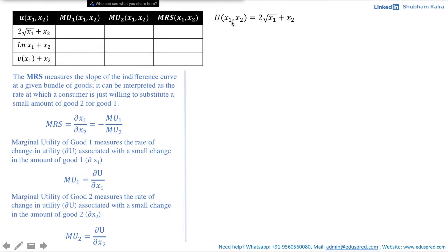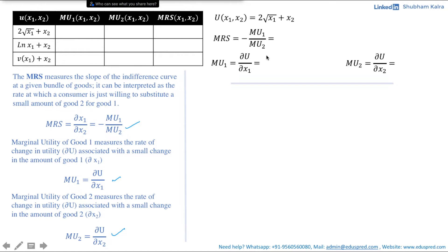The first utility function is u(x1, x2) = 2√x1 + x2. We know that MRS = −MU1/MU2, so we need to calculate the marginal utilities. To calculate MU1, we partially differentiate the utility function with respect to x1, keeping x2 constant — the derivative of a constant is 0. So the partial derivative of u with respect to x1 is 2/(2√x1) + 0, which simplifies to 1/√x1. Thus MU1 = 1/√x1.